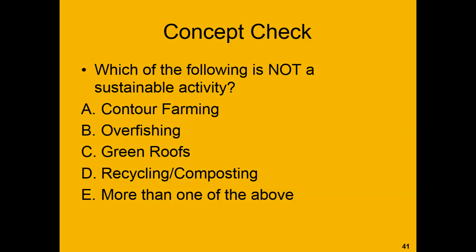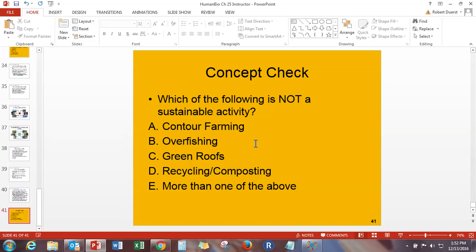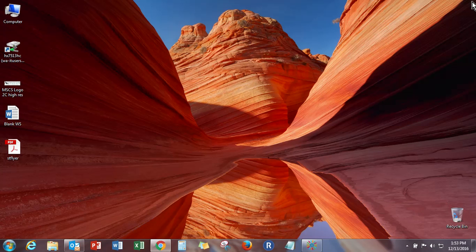Concept check: which of the following is not a sustainable activity? Contour farming, overfishing, green roofs, recycling, or more than one of the above? The correct answer is overfishing. Overfishing involves removing fish from the aquatic environment faster than they can be replenished, and that is not a sustainable activity. And that's all we have for this lecture recording. If you have any questions, please feel free to post them on the discussion board, send an email, or swing by my office. Happy studies!